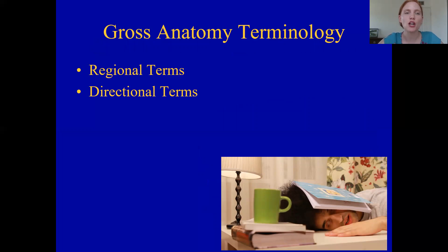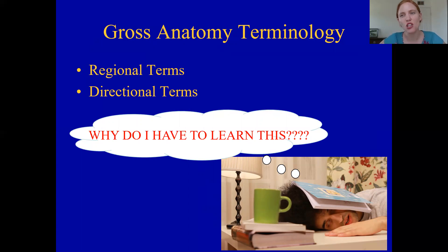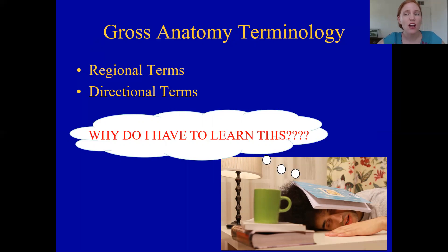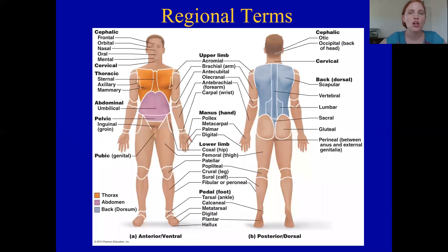On to the terms. Today we're going to talk about two different types of terms. The first is regional terms — all the different body parts have their own special name. Then we're going to talk about directional terms. We learn this terminology because these terms are universal, used everywhere, so that when we're talking about parts of the body, we can communicate with other people and everyone understands. These terms require a lot of practice, like learning the vocabulary of any language, so you need to practice them, starting with regional terms.